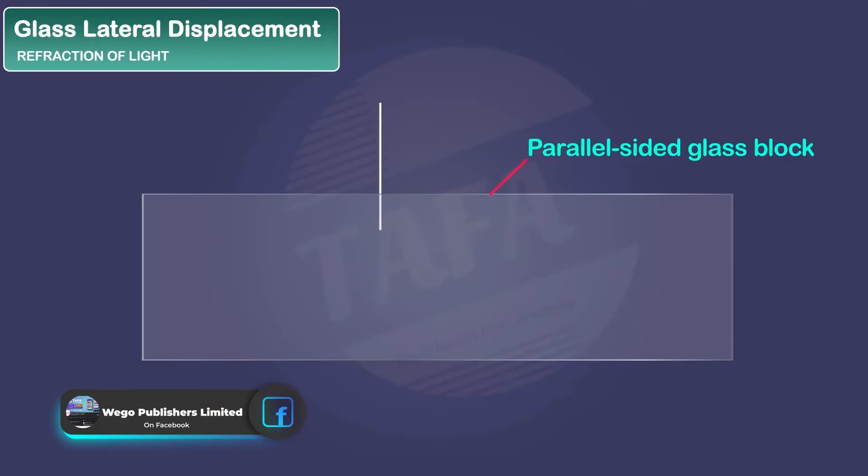Here we have a parallel-sided glass block and a ray of light that is incident at an angle I.